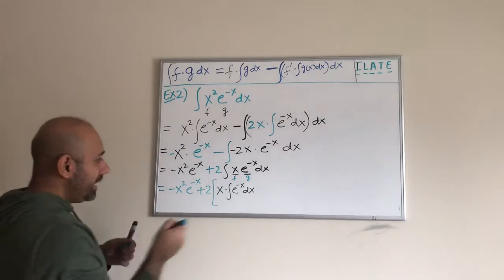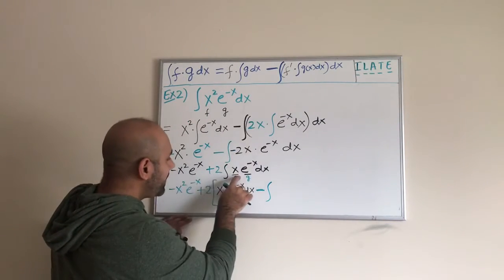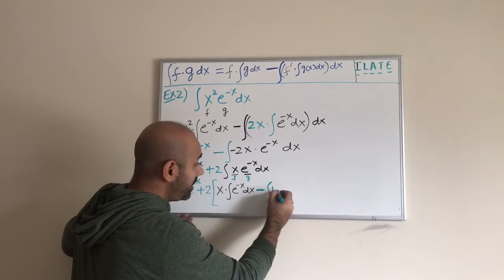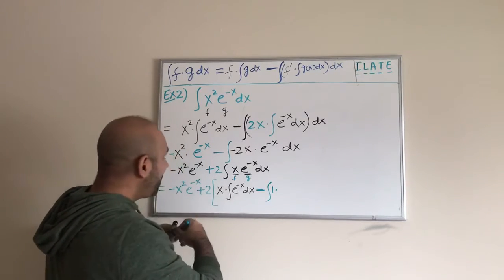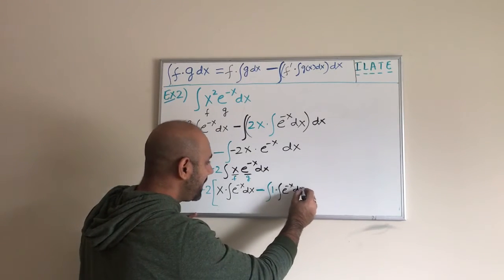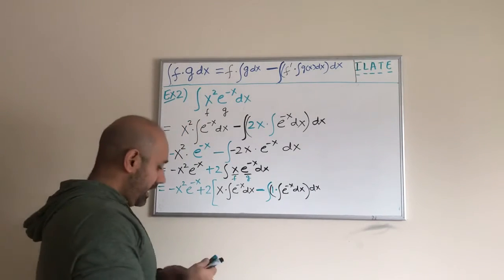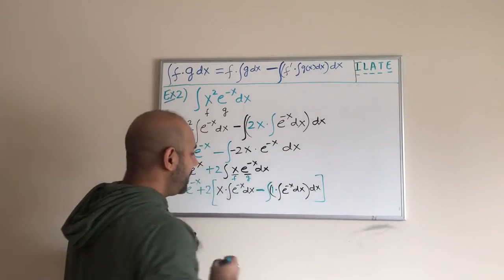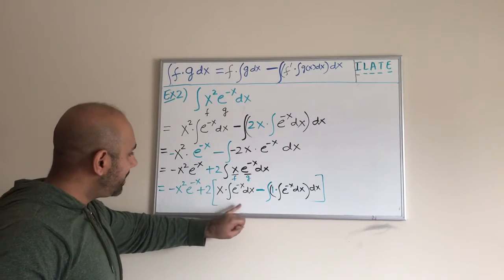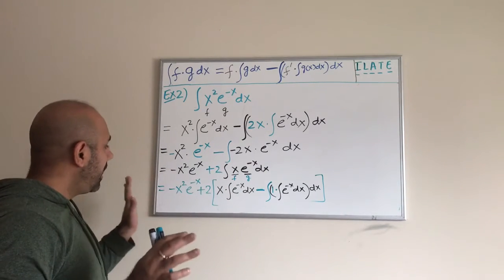Then there's a minus, then an integral, and I take the derivative of f — which in this case is x — so the derivative of x is 1, which is good news because that gets rid of the x term. Then there is also the integral of g(x), which is e to the power negative x dx. Please do not forget there is one more dx outside. And since we opened a square bracket, we also have to close the square bracket.